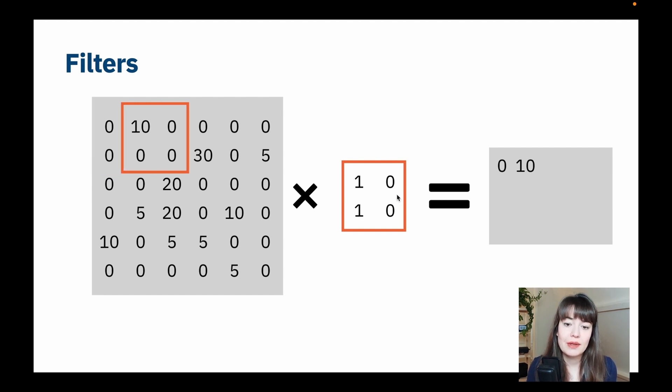And if we go to the next step, we're going to do the same thing just by sliding it one step to the right. And what we'll be doing will be 10 times 1, 0 times 0, 0 times 1, and 0 times 0. And that means when you sum them all up, we have 10. Basically, you can keep going like this, and then you traverse the whole image.